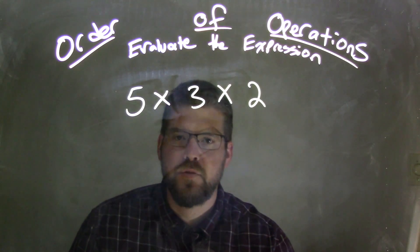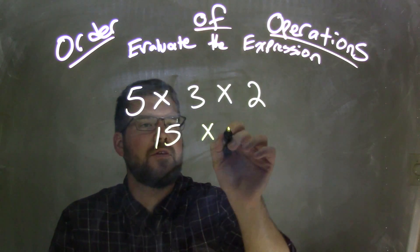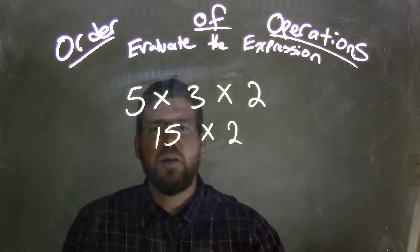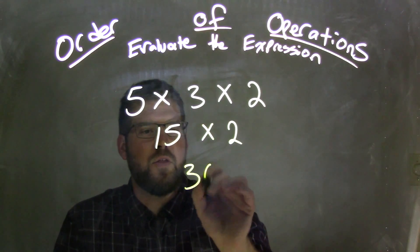So let's read from left to right. 5 times 3 comes first, that would be 15 times 2. Then 15 times 2 comes out to be 30.